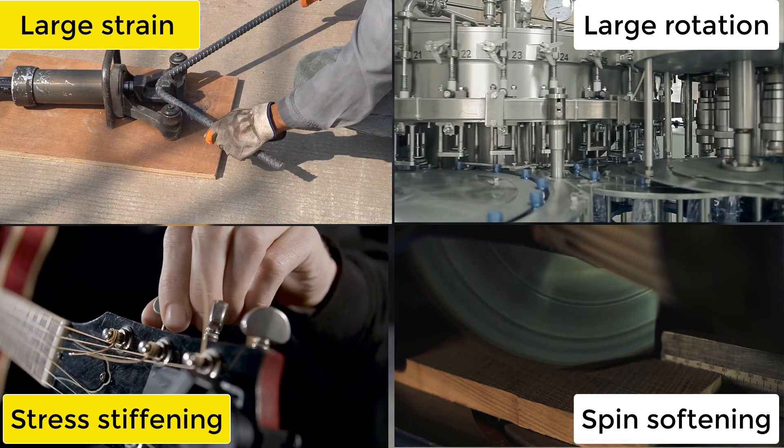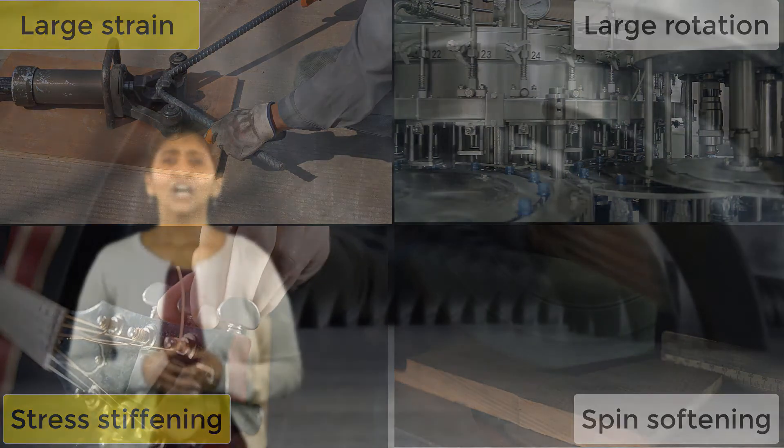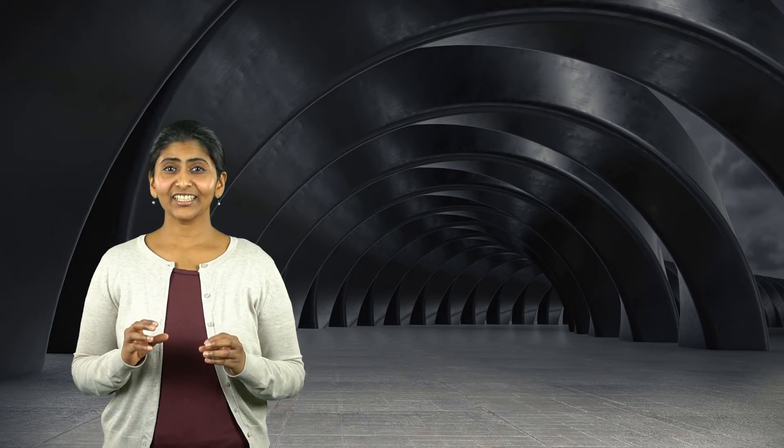The stress stiffening here is same as what we discussed earlier. Turning on large deformation considers both the change in shape and the stress stiffening. We have seen why stress stiffening is important. But is change in shape important too?